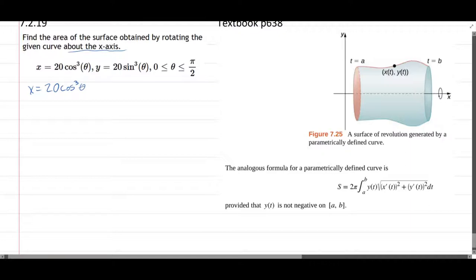So x is 20 cos³θ. x' is 3 times 20, which is 60 cos². Derivative of cosine is sine, negative sine. So we'll write it as x' = -60 cos²θ sin θ.